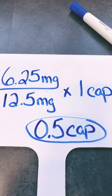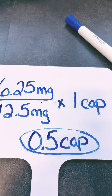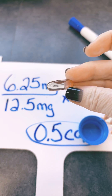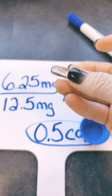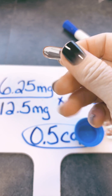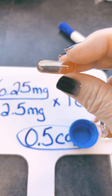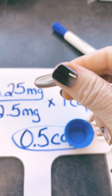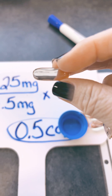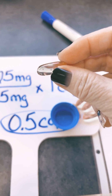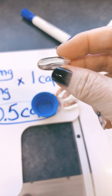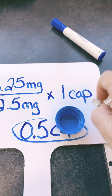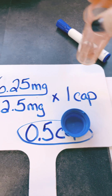But when you go to get this, this is how your medicine comes — it's a liquid-filled capsule. It's not one where you can pour it out. There's no way you can give a half a capsule of this medicine. So we need a different dosage form. We would have to call the pharmacy to see if they can send us a different dosage form, like a tablet — a scored tablet would be best.